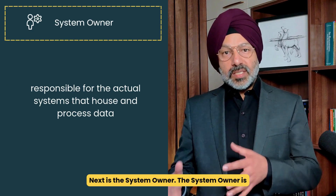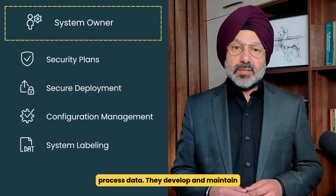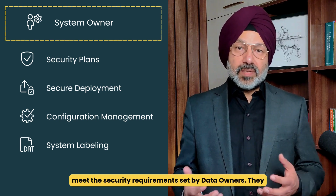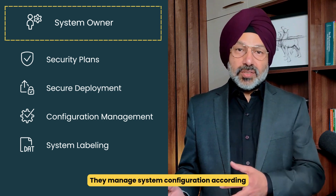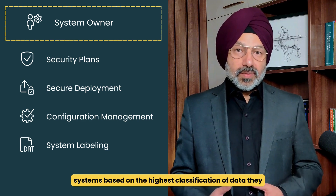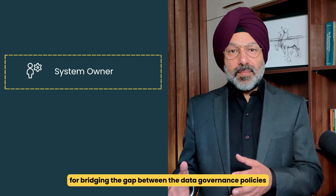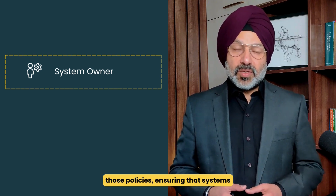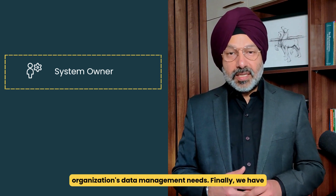Next is the system owner. The system owner is responsible for the actual systems that house and process data. They develop and maintain system security plans to ensure systems meet the security requirements set by data owners, ensure secure deployment and operation of systems, manage system configuration according to security requirements, and label systems based on the highest classification of data they process. This role is essential for bridging the gap between data governance policies and their technical implementation.